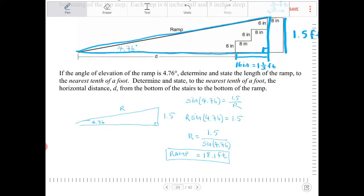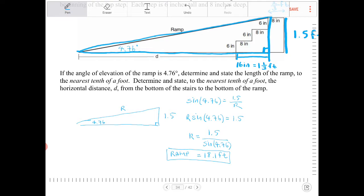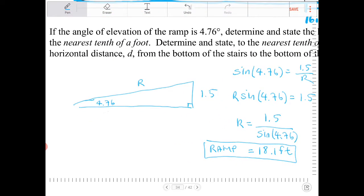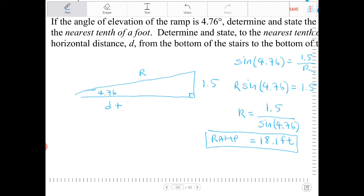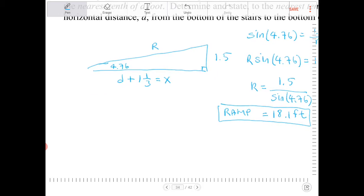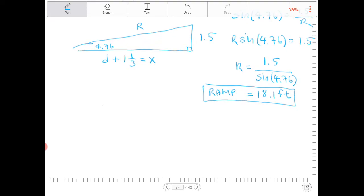Then I've got to figure out what is the length of d. So to find out the length of d, the horizontal here is going to be d plus 1 and 1/3. And I'm going to call this d plus 1 and 1/3, I'm going to call that x. So x is going to be adjacent to 4.76, and 1.5 is opposite. So I'm going to use a tangent ratio to find out what x is.